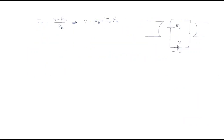In a DC motor, the back EMF is represented as Eb and the supply voltage as V. The armature carries current Ia. We can write the equation: the supply voltage V equals back EMF Eb plus Ia times Ra, where Ra is the armature resistance.